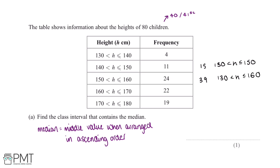If there are 22 people between 160 and 170 centimetres and 39 between 130 and 160 centimetres, then there will be 61 between 130 and 170 centimetres.